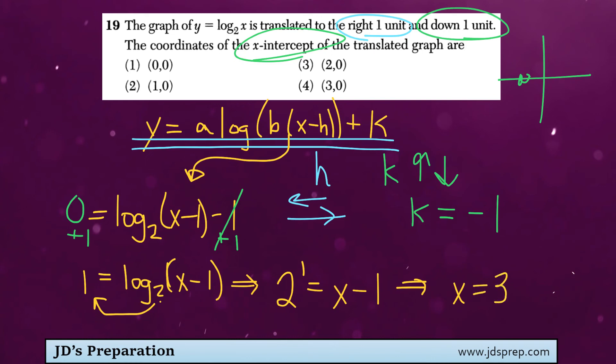So that means the coordinates of our x-intercept would be 3, 0, which is option number 4.